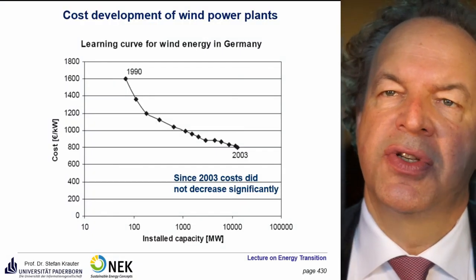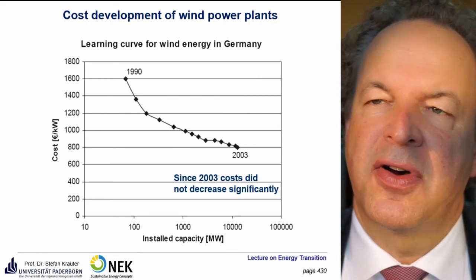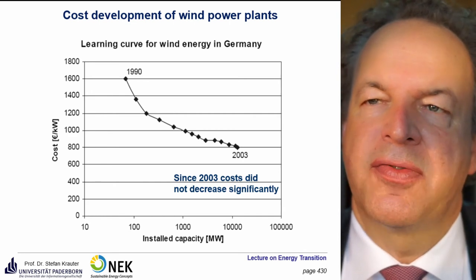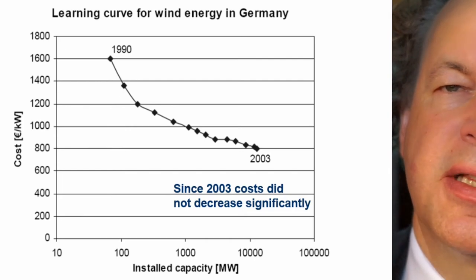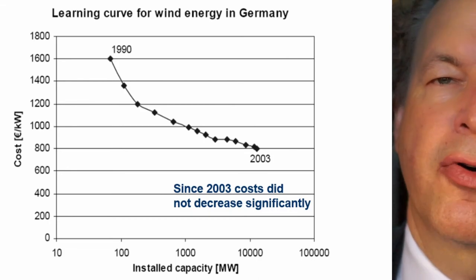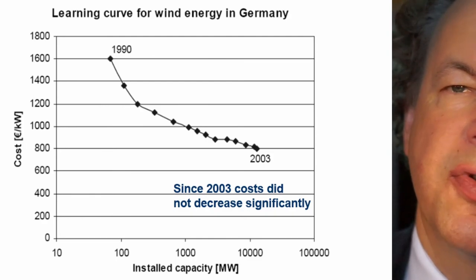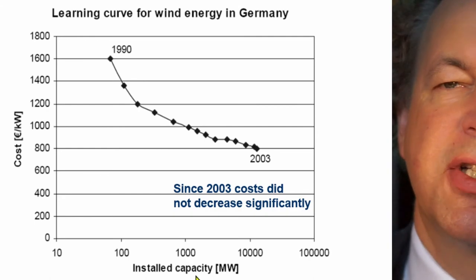Here you see the cost development, unfortunately only until 2003. There was a kind of saturation — they don't get much cheaper, not like photovoltaics which have a constant price reduction rate. For Germany, in 1990 a kilowatt of nominal wind power capacity cost 1,600 euros, while it went down in 2003 to about 800 euros. This is also, similar to photovoltaics, a function of installed capacity.